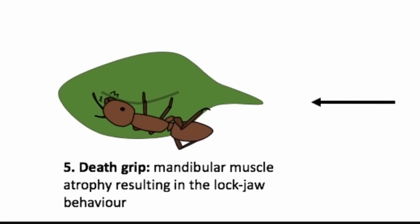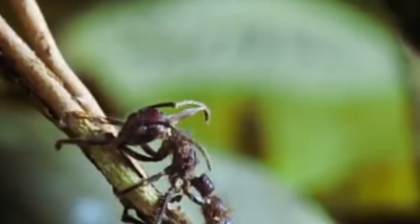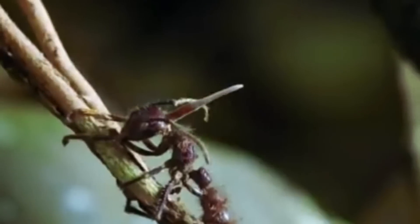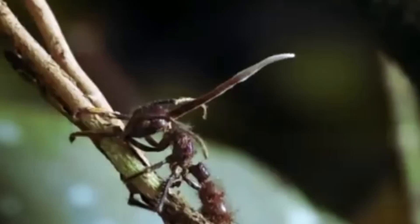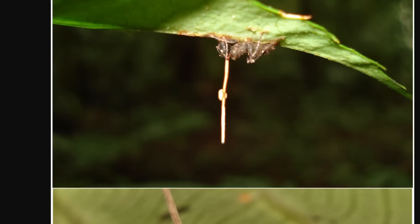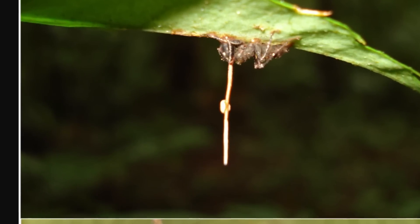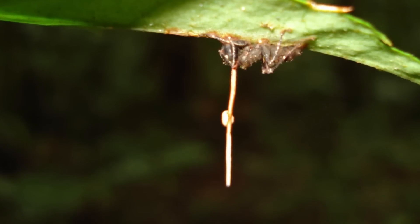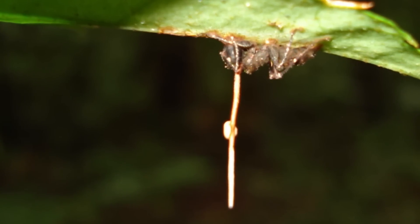If it finds these conditions, it initiates the last step known as the death grip — as seen in the BBC video. The ant grabs onto the stem and bites really, really hard, way harder than usual, with its mandibles fixed pretty much forever. As soon as this happens, the fungi literally kill the ant, using the rest of its body for their own sustenance, all so that the spores can easily propagate through the air and potentially infect other ants.